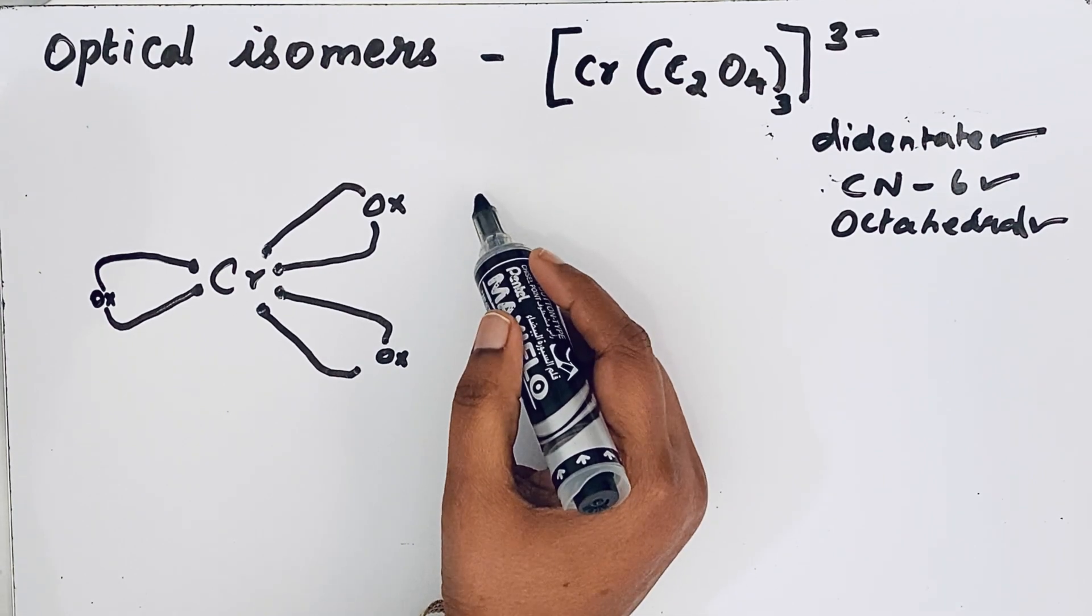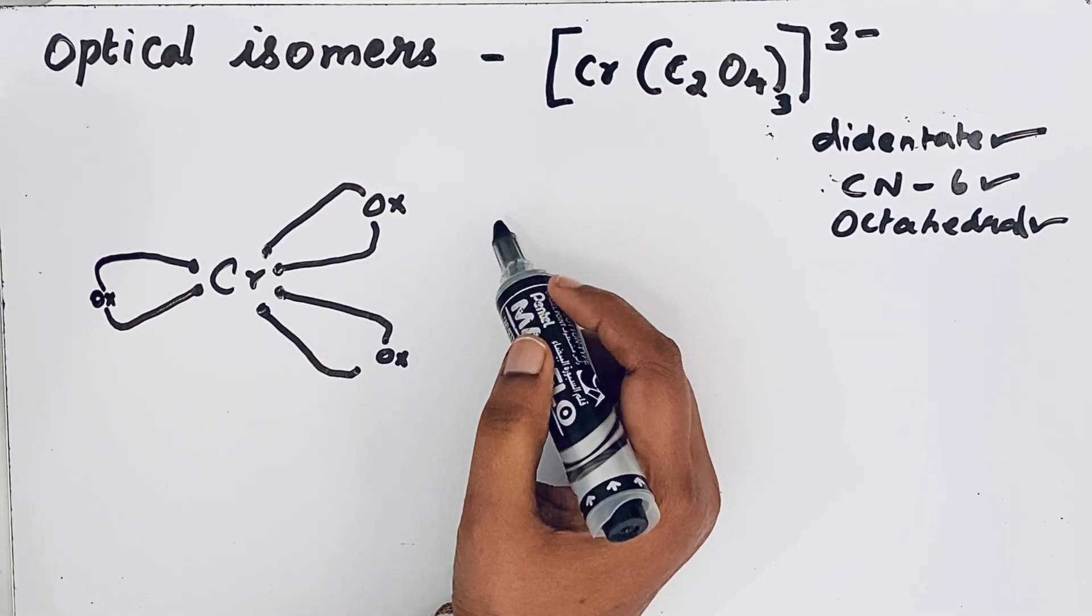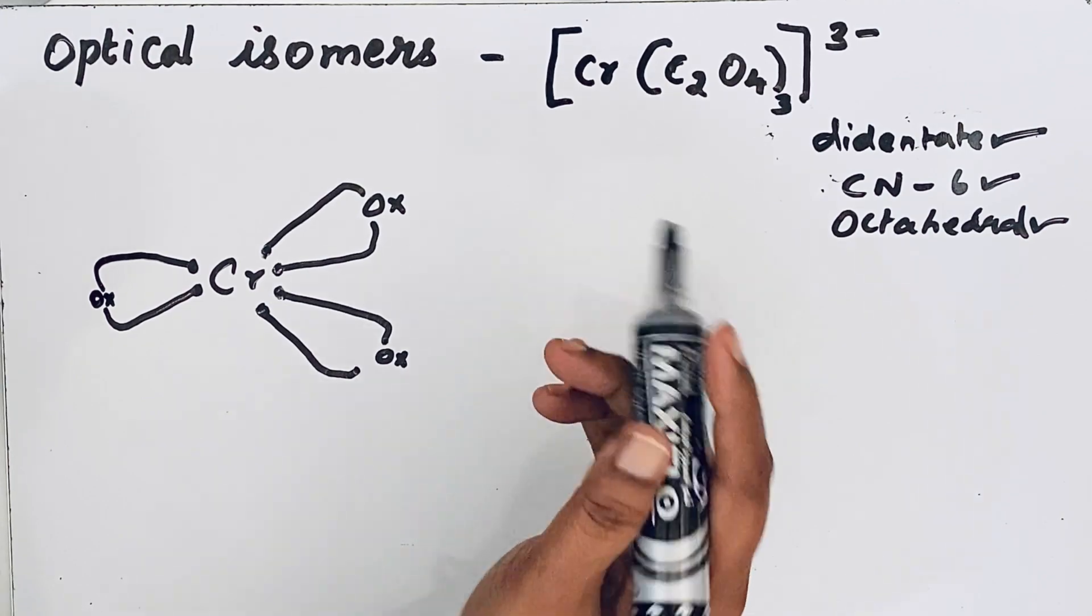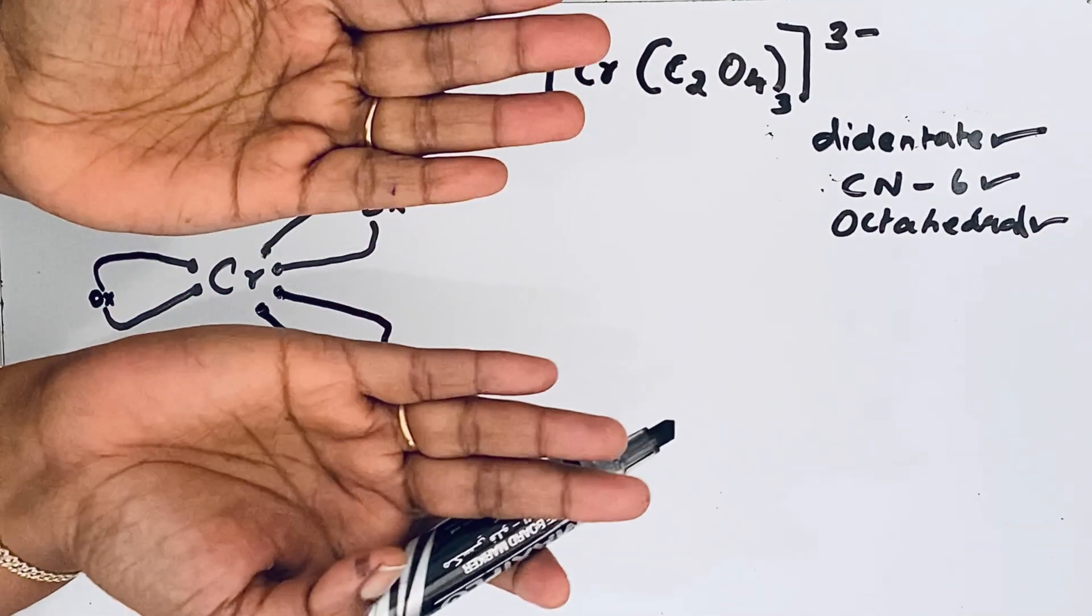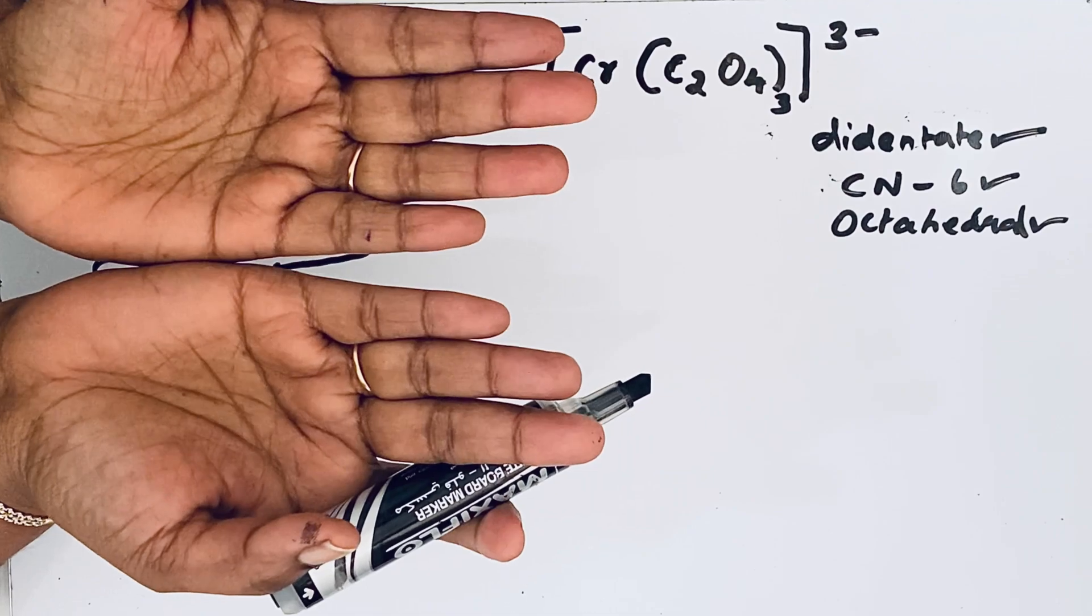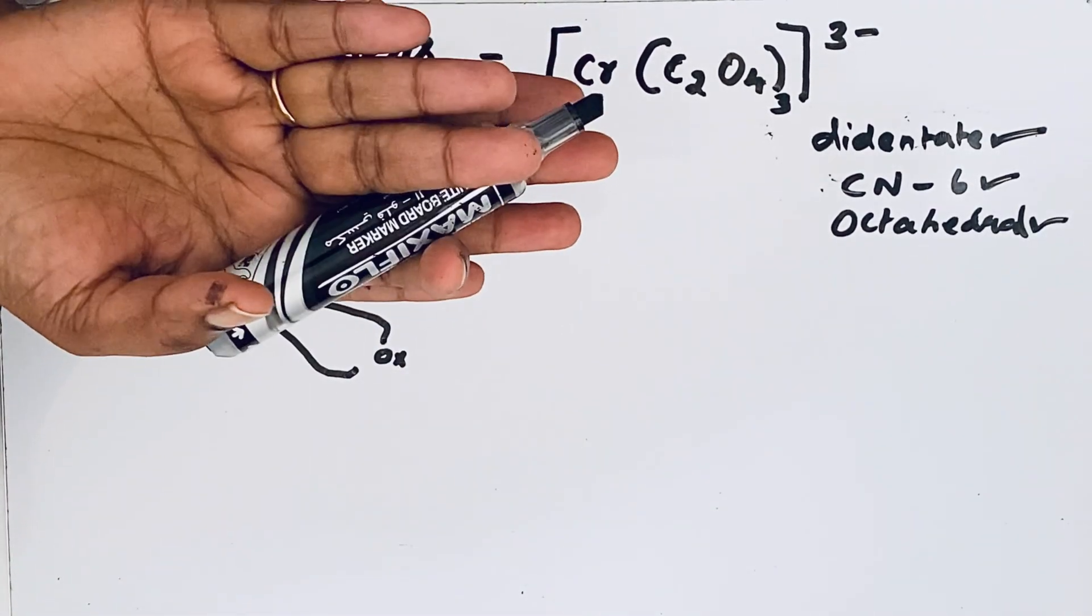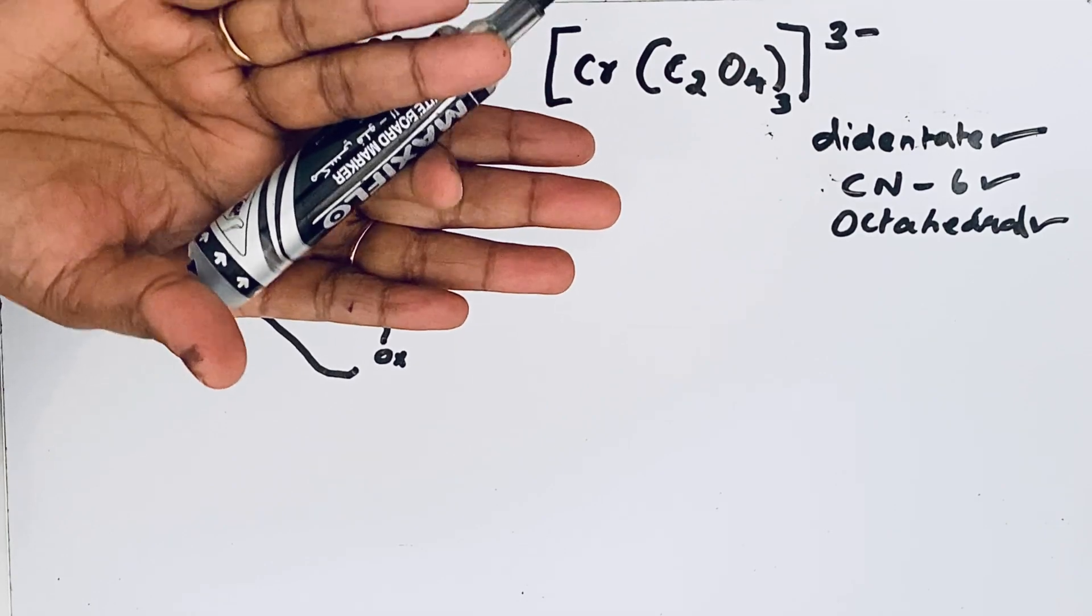So totally we have six donor atoms. We know that optical isomers are mirror images which are not superimposable on each other. What is not superimposable? For this you can take our hands as an example. Both of our hands look similar to each other, but if you are keeping one on the other, they are not superimposable.